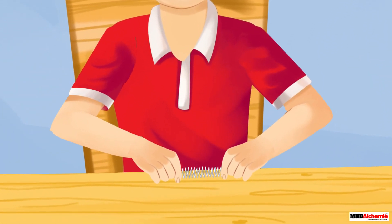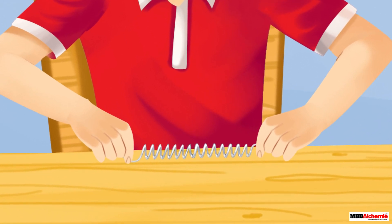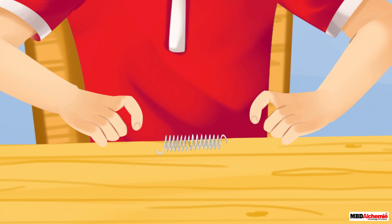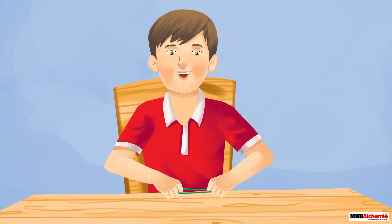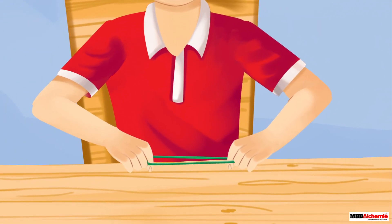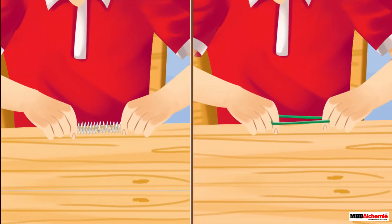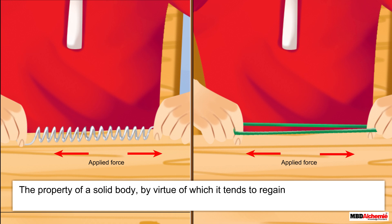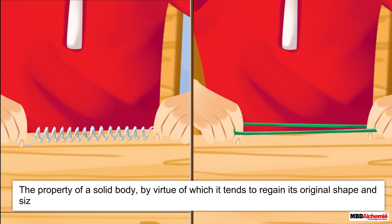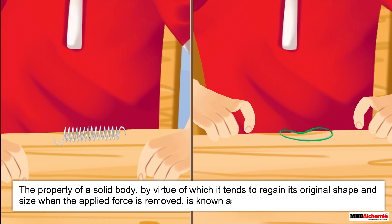You may have noticed that when you stretch a spring its shape and size changes, and when you release its ends it gets back to its original shape and size. The same thing happens when you stretch a rubber band and then release it. The property of a solid body by virtue of which it tends to regain its original shape and size when the applied force is removed is known as elasticity.